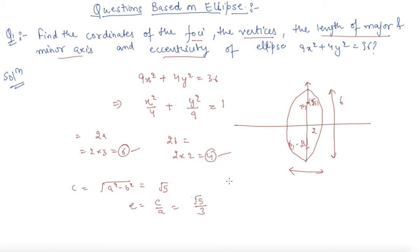The coordinates of the vertices are (0, 3) and (0, −3), and the foci are (0, √5) and (0, −√5). We have also found the length of the major axis, minor axis, and the eccentricity. In this way, you need to find all the terms asked by first converting the equation into the standard form.